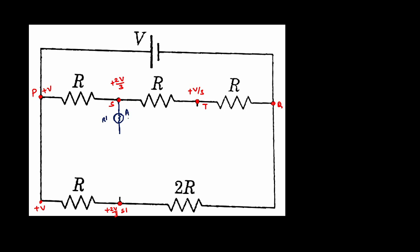Suppose if I name this one as voltmeter A, then let us consider another voltmeter B. Even its resistance is R dash. Suppose if we connect these two A and B voltmeters — we know that they are connected between S and S dash. S and S dash are at the same potentials, so there is no potential difference. Therefore there is no flow of current between node S and node S dash, and we can easily say there won't be any flow of current in this branch because they are connected across the same potential points.